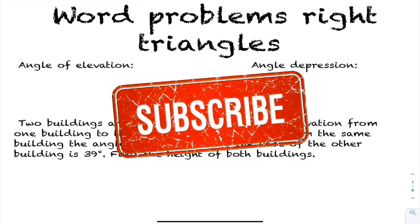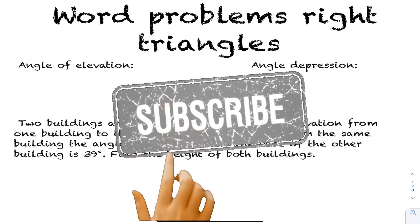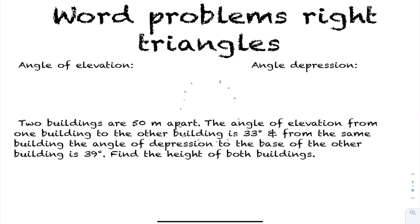In today's lesson, we're going to be looking at word problems of right-angled triangles. Before we get to talking about the word problems of right-angled triangles, we want to take a look at two common definitions: the angle of elevation, and the angle of depression.